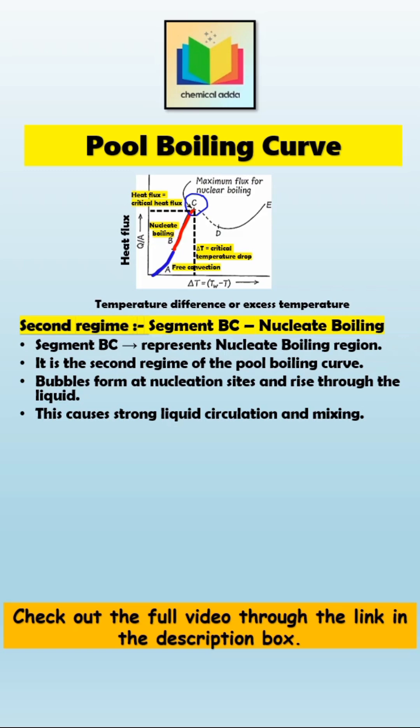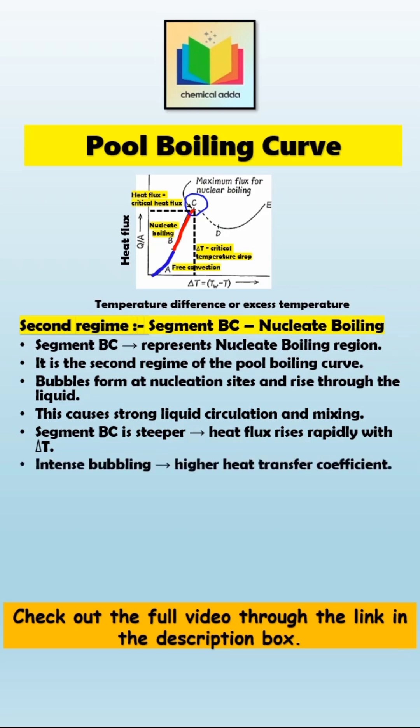If you look at the curve, segment BC is a straight line, but much steeper than segment AB. This means the heat flux rises very rapidly with surface temperature. As delta T increases, bubble formation becomes very high, producing strong liquid motion, and this results in intense bubbling, stronger liquid motion, and much higher heat flux and heat transfer coefficient compared to free convection.